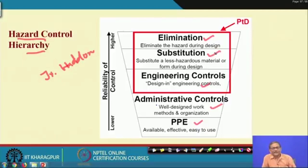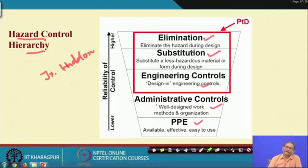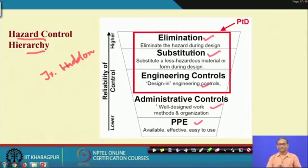Once PHA is done, all hazards are known. For each hazard, check whether it can be removed at the design stage — if so, remove it. Elimination: for example, if work can be done on the ground floor, do it there even if working at height might seem more efficient, because from a safety point of view it is not.